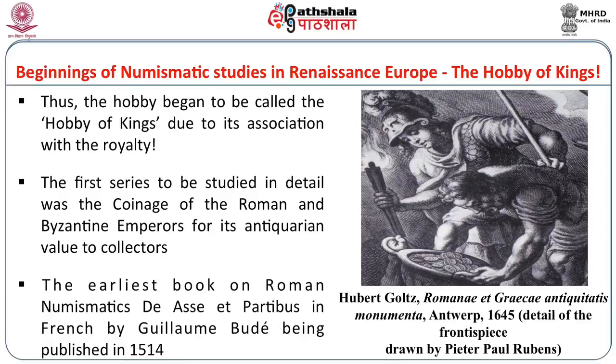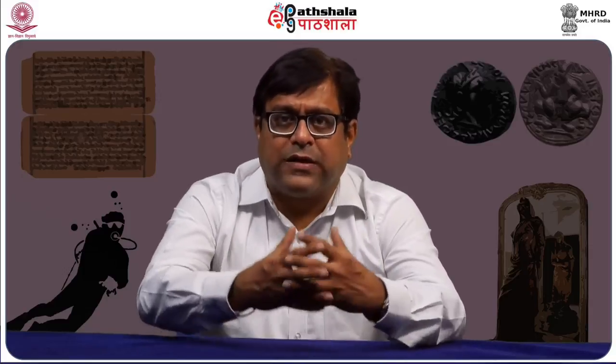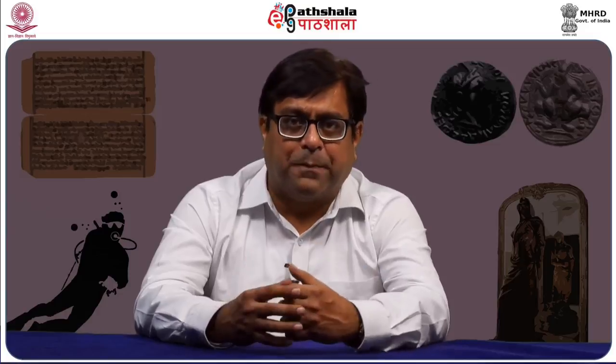The first series to be studied in detail was the coinage of the Roman and Byzantine emperors for its antiquarian value to collectors. The earliest book on Roman numismatics was by a very influential Frenchman Guillaume Boud, written in Latin with the title De Asse et Partibus, published in 1514. Today across Europe all the coin cabinets are in a rush to see which are the oldest books they have on the subject.